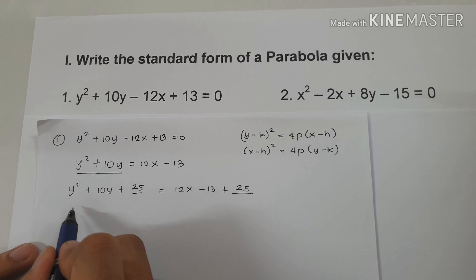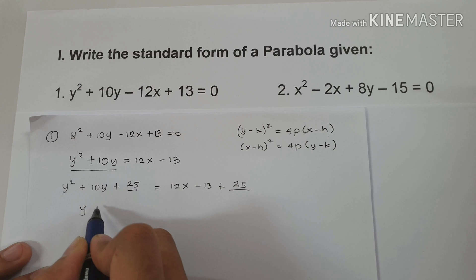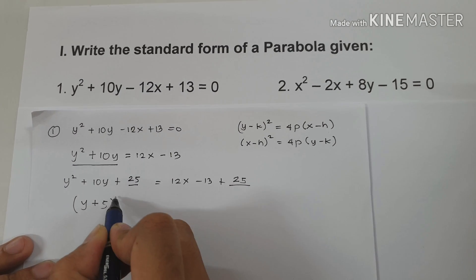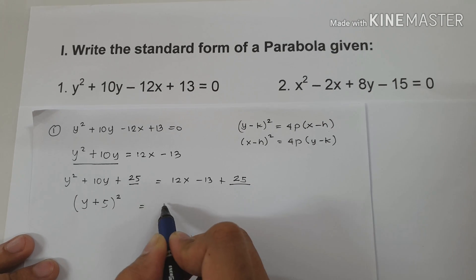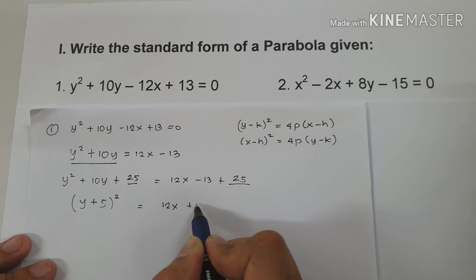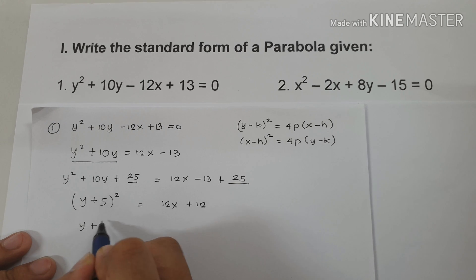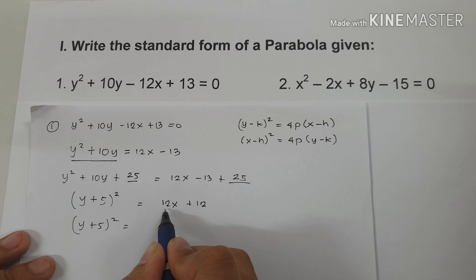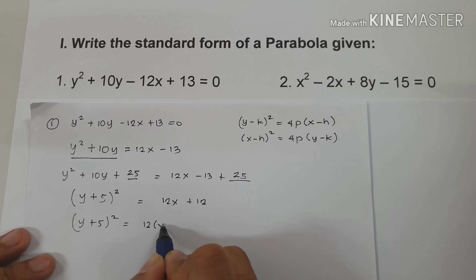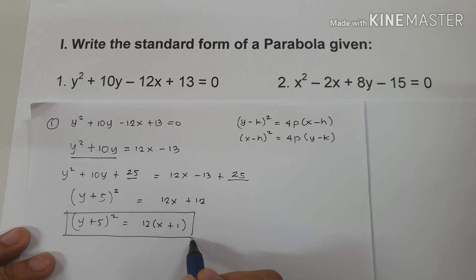We then square the binomial. The square root of y squared is y, the sign of the middle term is positive, and the square root of 25 is 5. So we have y plus 5 squared equals 12x, and negative 13 plus 25 is positive 12. To write the final equation, we factor 12x plus 12 as 12 times x plus 1. This gives us the standard form of the equation of the parabola.